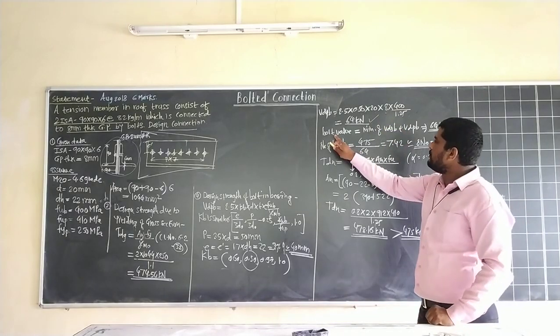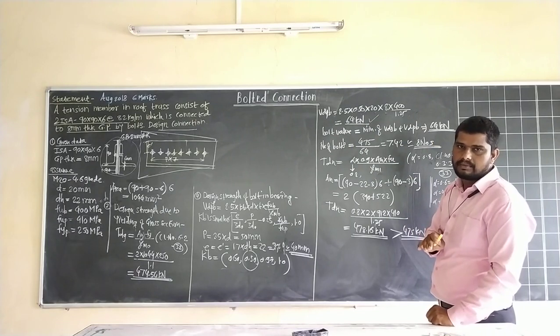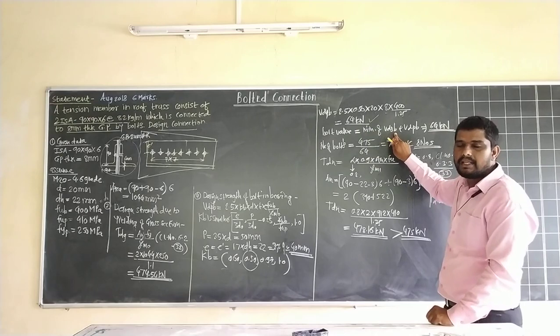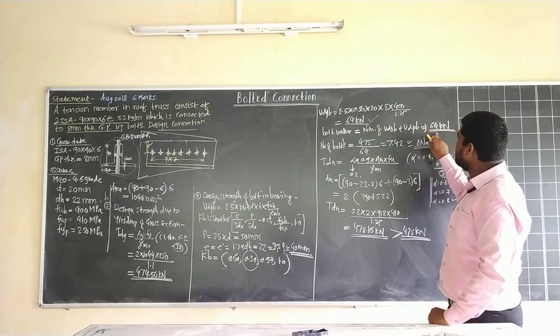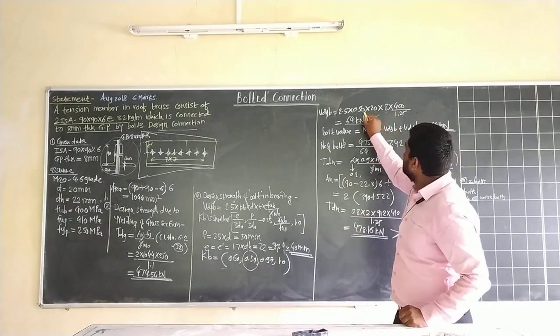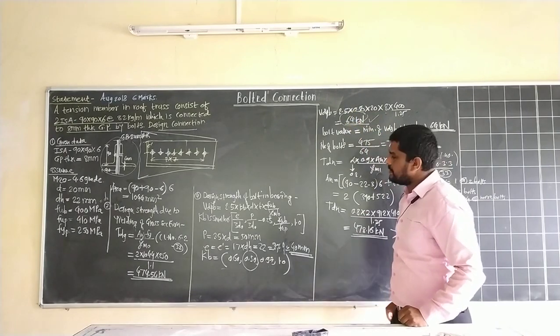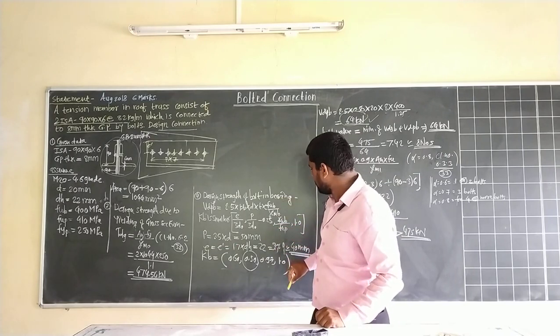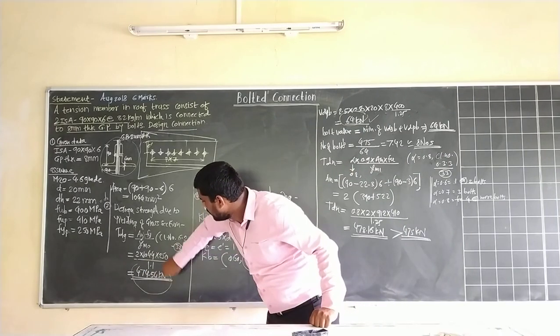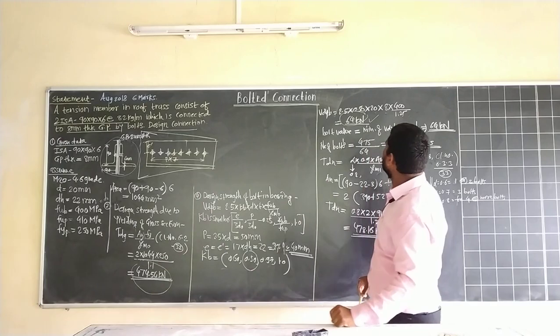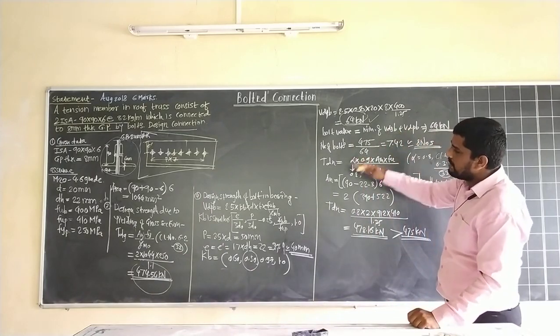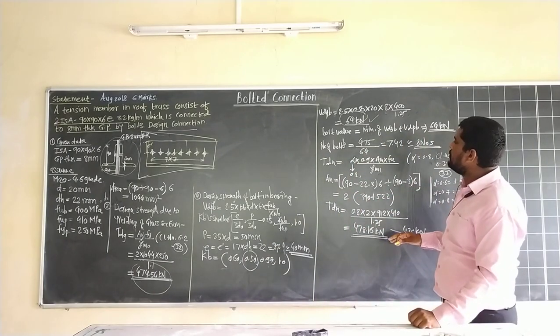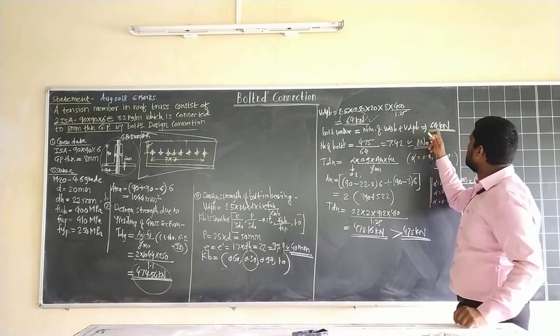Find the bolt value, which equals minimum of V_dSP or V_dPB. V_dPB value is 64 kN, the other value is 474. Out of that, smaller value is 64 as minimum.